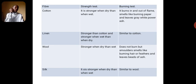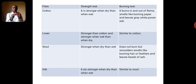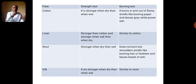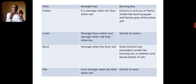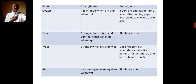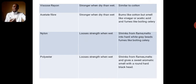Wool is stronger when dry than when wet. Under the burning test, it does not really burn but smolders — it folds together and smells like burning hair or feather. It also leaves beads of ash. Silk is stronger when dry than when wet, and under the burning test it is similar to wool — it smells like burning hair or feather.